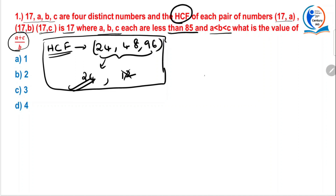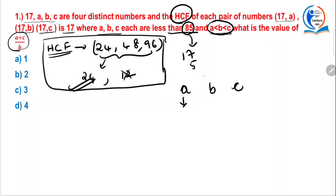Now we will take these numbers 17A, 17B and 17C. A is less than B is less than C, which means two things: ABC are distinct numbers, so you cannot take a random value and substitute. They are saying all three are less than 85, which is 17 fives. So A, B and C have to be less than 17 into 5. The possible values are 17×2=34, 17×3=51, 17×4=68.